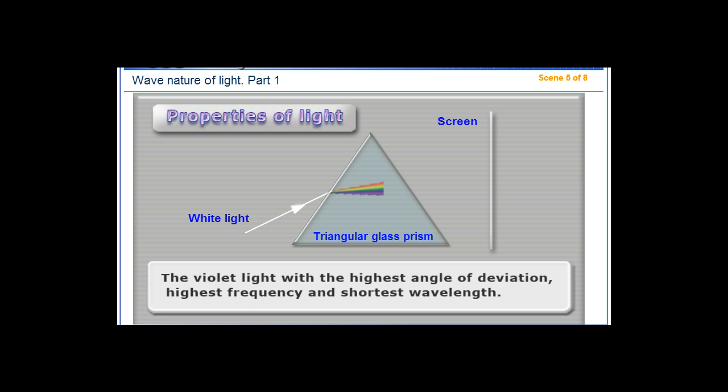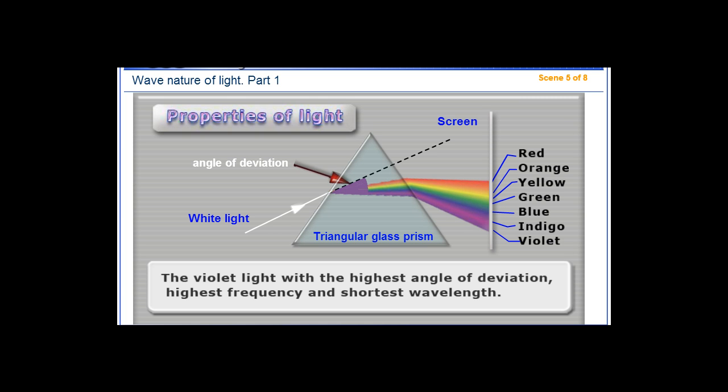The violet light has the highest angle of deviation, highest frequency, and shortest wavelength.